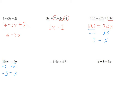This is also a one-step equation, but there's a little trick. I need to undo the negative 1.5 times x, so I divide by negative 1.5 on both sides. The twist is that whenever I divide or multiply by a negative number, I have to change the direction of the inequality — that's really important. So 4.5 divided by negative 1.5 gives me negative 3.